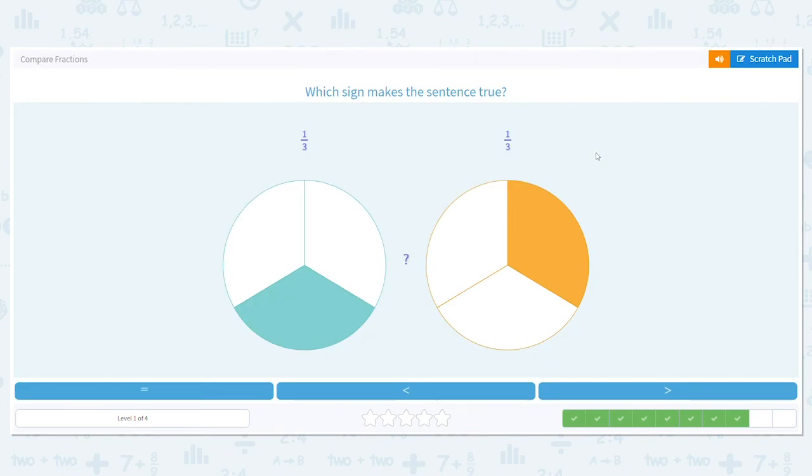How about here? One-third and one-third. Now, you can see they're shaded in in different areas, but look at our fractions. One-third, one-third. They are what? They're equal. Good job.